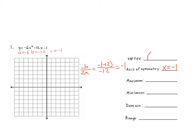Negative 1 — it's the same as our axis of symmetry. How do we find the second number? We plug it in. So we have y is equal to negative 6 times negative 1 squared minus 12 times negative 1 minus 1.